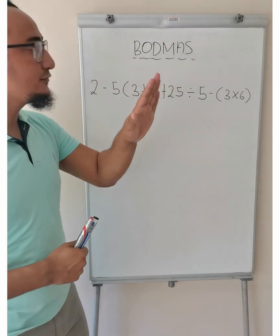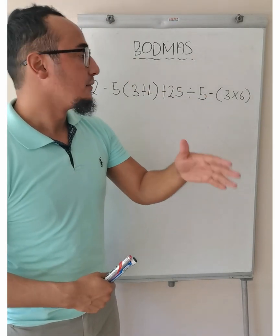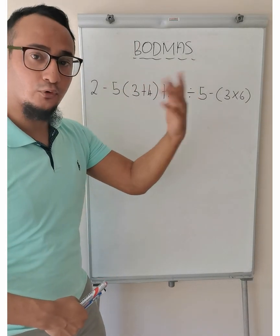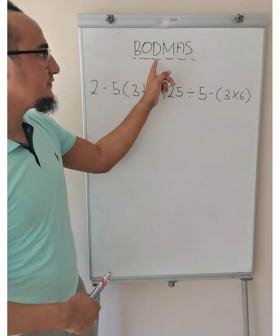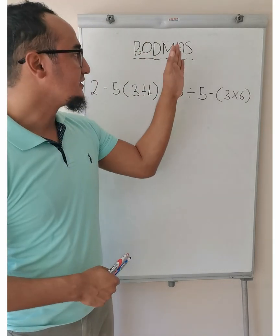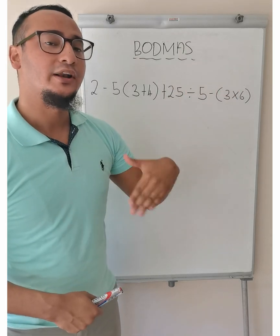So, we all know what it stands for, we all know what it means. Bodmas, B stands for brackets, O stands for of or order of, division or D stands for division, M stands for multiplication, addition and subtraction.